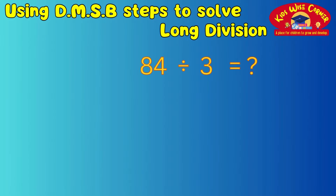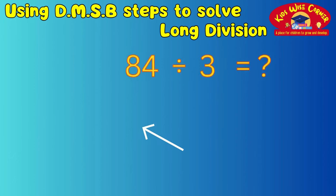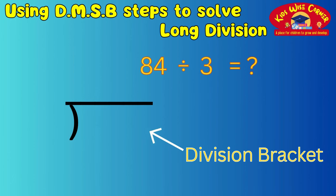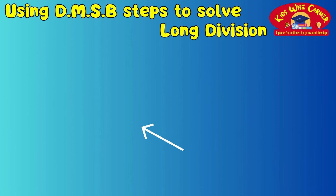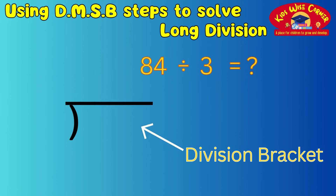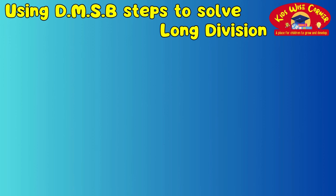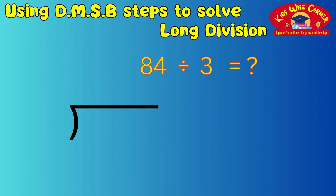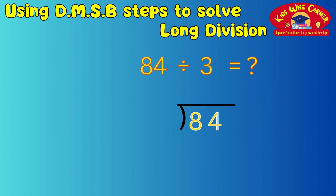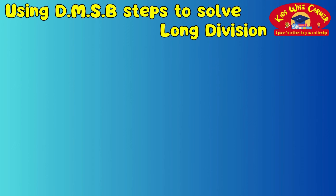Let's start with an example: 84 divided by 3. We'll do it step by step. We will use a division bracket to do long division — this will be our family home for our long division sums. To draw a division bracket, you use a bracket and a line joined together. Let us set up the division bracket and put the numbers in the correct position: write the number 84 inside the division bracket and 3 outside, like this.